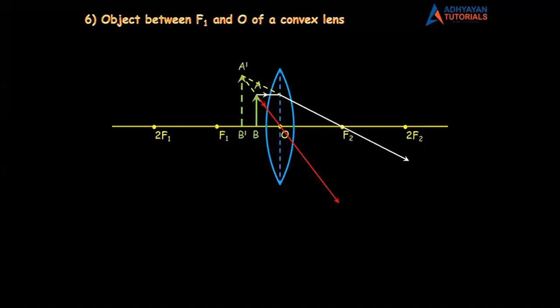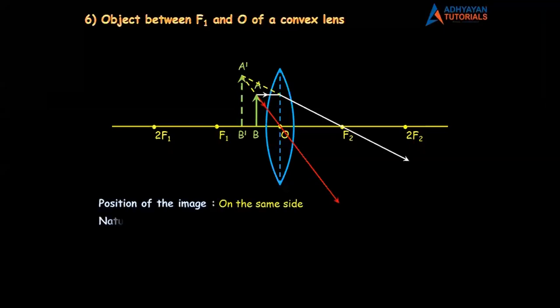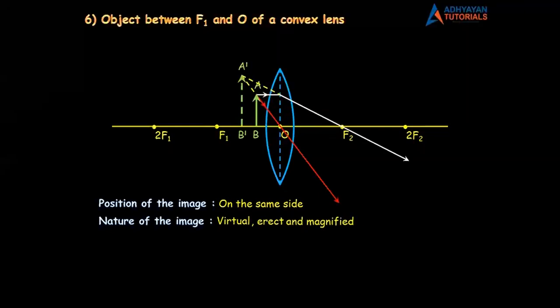Name the image as A dash B dash. Then at the top write the question, and below the diagram write two things fast. As I said — do not worry about exactly where you get the image, it should be on the left side. Write the position of the image on the same side. And write the nature of the image: virtual, erect, and magnified.